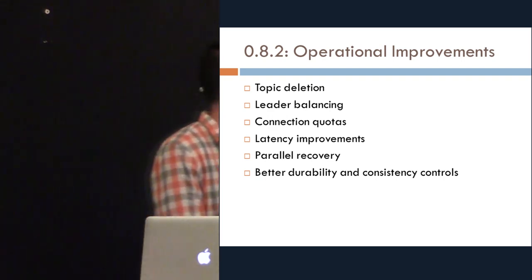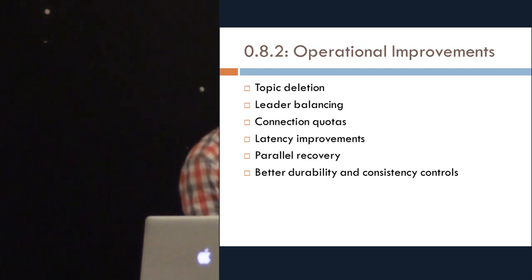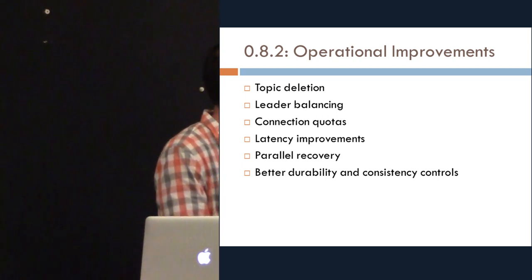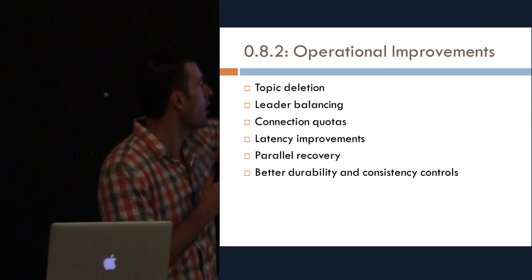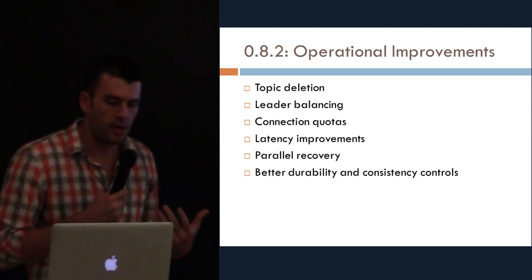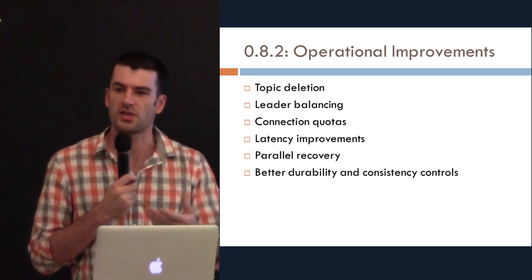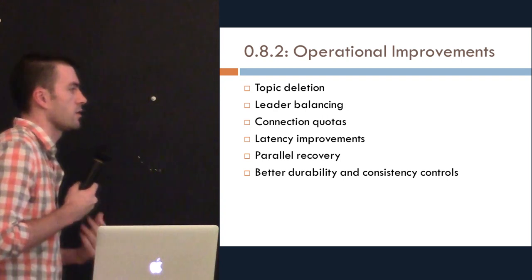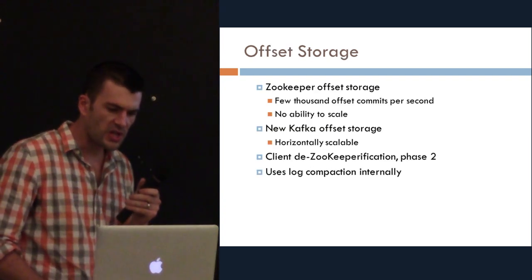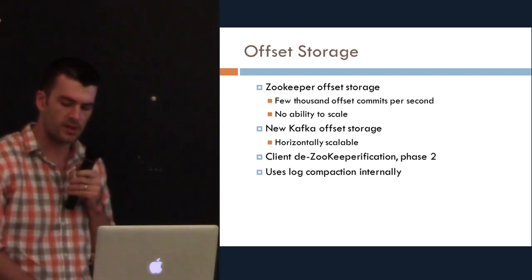So what are the operational improvements? Dynamically deleting topics — crazily enough you couldn't do this, and people using Kafka have been asking for it a lot. Balancing leadership among all the machines — if a machine fails and comes back, does it take over all its load properly? Some quotas. We've done a lot of work on latency — from the point of view of somebody writing, how long does it take to acknowledge their message. And more nuanced durability and consistency controls for more critical data. This is along with several hundred bug fixes.